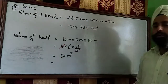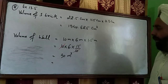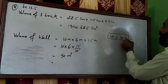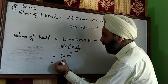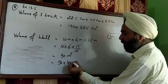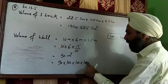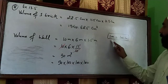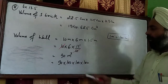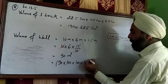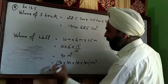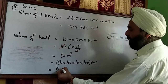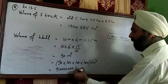Now we convert meters to centimeters to match units. We know 1 meter = 100 centimeters. Since we have cubic meters, we multiply by 100 three times — once for each dimension. So 90 m³ becomes 90 × 100³ = 90,000,000 cubic centimeters, which has seven zeros.